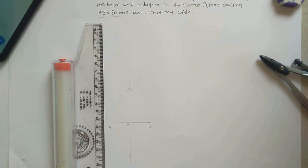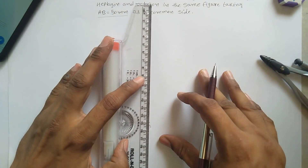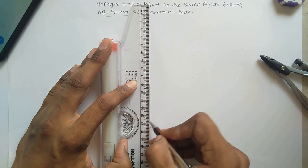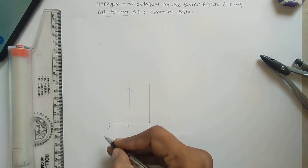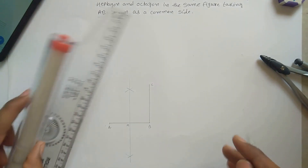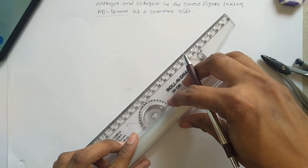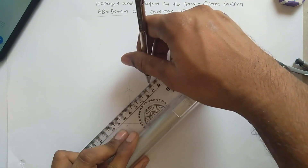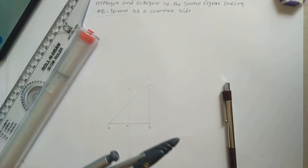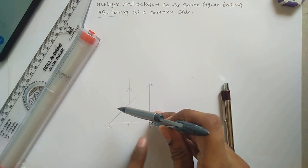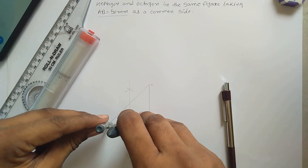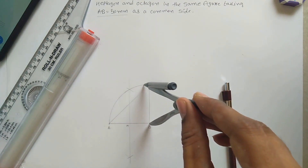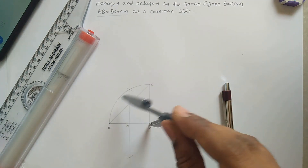Now draw a line perpendicular to the bisecting line, with the same dimension of 50 mm. This point is your C point. Join A and C. Then, using a compass with pointer on B and radius equal to AB — that is 50 mm — draw an arc.